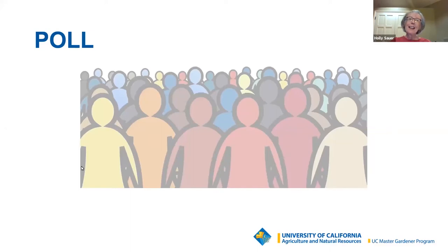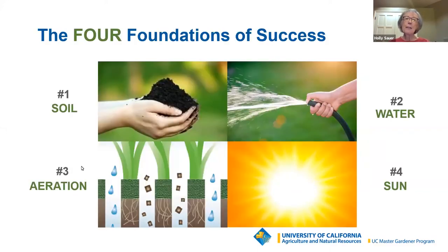Thank you very much, Andrea — everybody welcome. I'm really glad to see so many of you here and so many different levels of propagation experience. I hope you really enjoy this presentation and learn a lot from it. This first slide covers the four foundations of success — critical requirements for successful gardening, which includes propagation. As I talk about propagating, I'll include information about what's needed in each of these four areas. We refer to these as good cultural care.